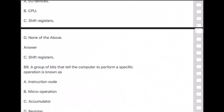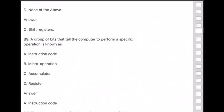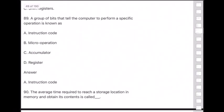Question 89: A group of bits that tell the computer to perform a specific operation is known as — answer is option A — instruction code.